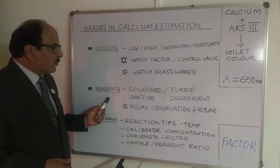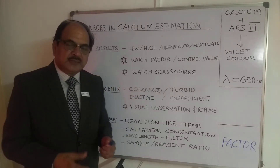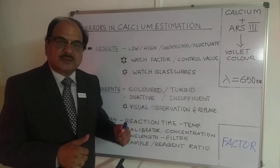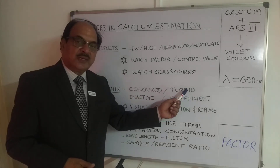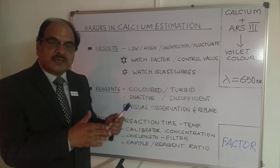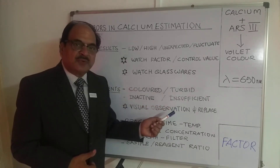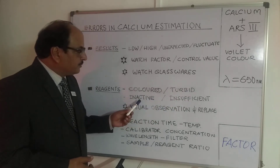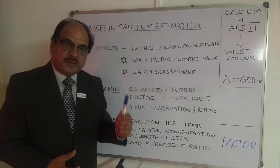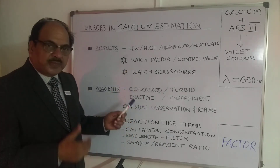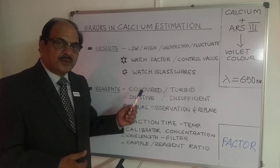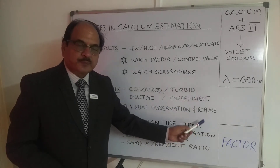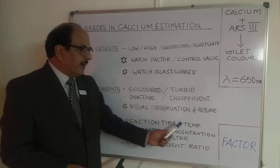Now let's look at reagent-related errors. The calcium arsenazo reagent is normally a dark reddish color, but contamination can change this. The reagent could become turbid due to heavy contamination, become inactive due to pH changes from contamination, or become insufficient in quantity — with air bubbles being drawn in during the last few milliliters. To avoid these errors, take the reagent into a beaker or test tube and check against light. A small volume in a long test tube can reveal whether the color is normal and whether there are particles. If you find any such issues, replace the reagent.